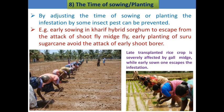The next technique is time of sowing or time of planting. By adjusting the time of sowing or planting, infestation by some insect pests can be prevented. For example, early sowing in kharif hybrid sorghum helps escape the attack of shoot fly and midge fly. Early planting of sugarcane avoids attack of the early shoot borer. A late transplanted rice crop is severely affected by gall midge, while early sown rice escapes the infestation.